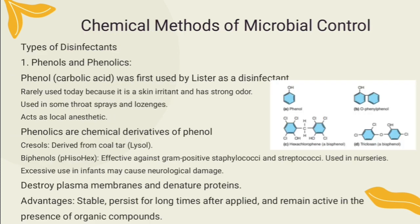Chemical agents are generally not intended to achieve sterilization — most reduce microbial populations to safe levels and remove pathogens from objects. An ideal disinfectant or antiseptic kills microorganisms in the shortest possible time without damaging the material treated. Among the important criteria for selecting an antiseptic or disinfectant are: the concentration to be used, whether the agent is bactericidal or bacteriostatic, the nature of the material to be treated, whether organic matter will be present, the temperature and pH at which the agent will be used, and the contact time with the surface.